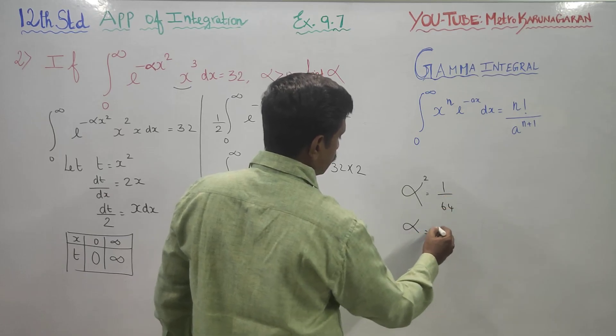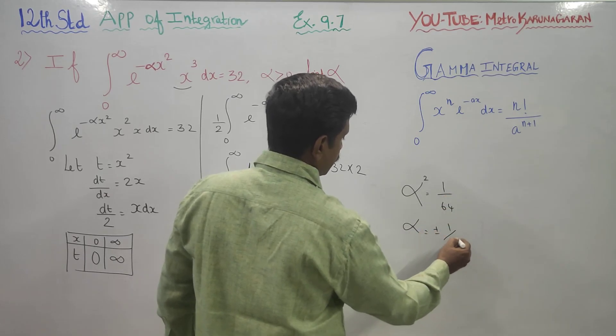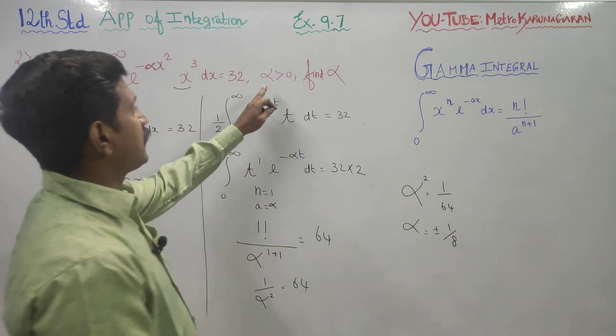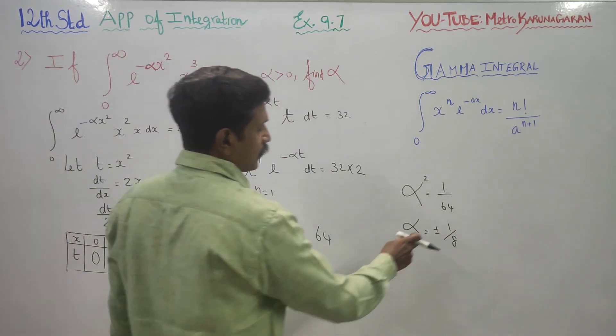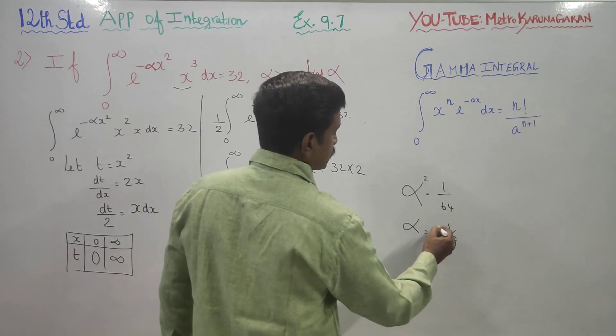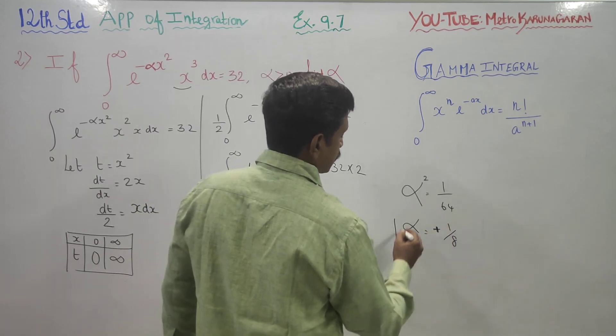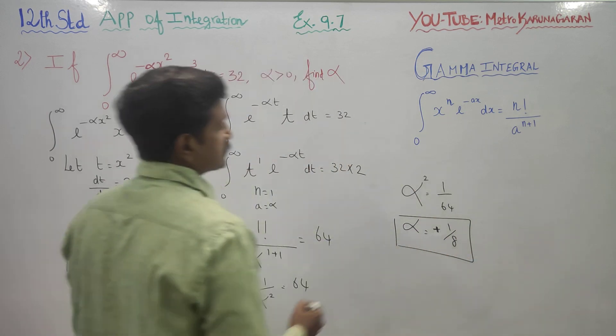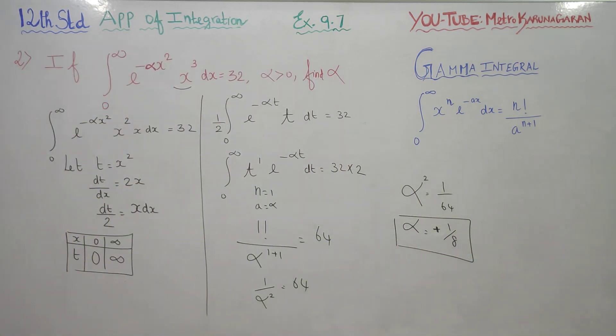If you take the root, you will get plus or minus 1 by 8, but it is clearly given alpha is greater than 0. Therefore you have to neglect the minus 1, so your only answer is alpha equals plus 1 by 8 as your final answer.